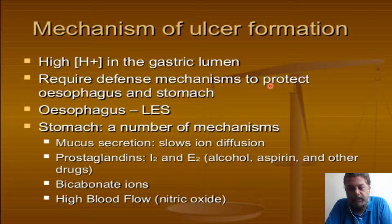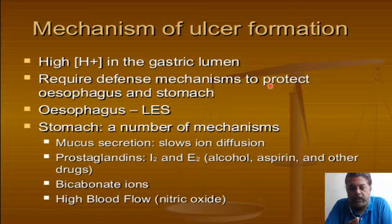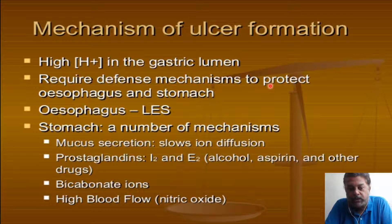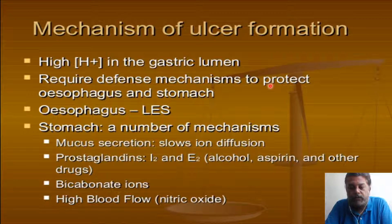There are a number of defense mechanisms available in the stomach. Mucus secretion slows ion diffusion, especially the hydrogen ions. Prostaglandins have very good defense against HCl-induced digestion of cells, which may be inhibited by alcohol, NSAIDs, and other drugs. Bicarbonate ions counter the acidic contents and help in decreasing the acidity and ulcer healing. Very high blood flow in the stomach mucosa also decreases dead cells through high turnover.